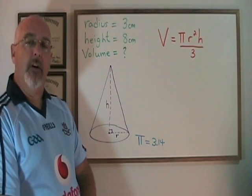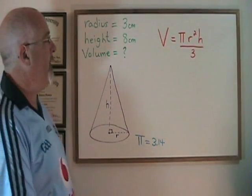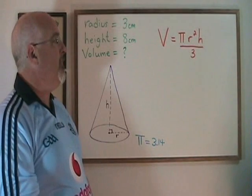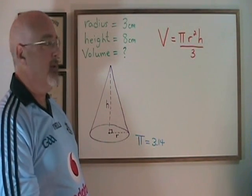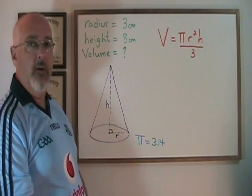The formula for the volume of a cone looks like this. V for volume is equal to pi r squared h over 3, where the r is the radius of the cone and the h is the height of the cone.